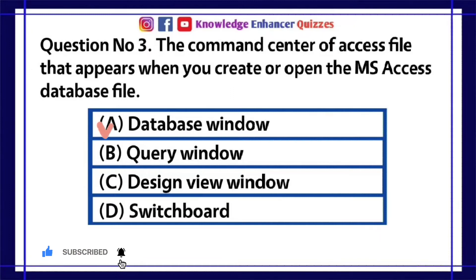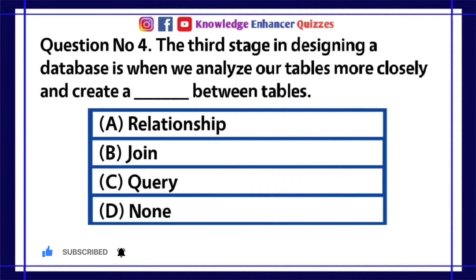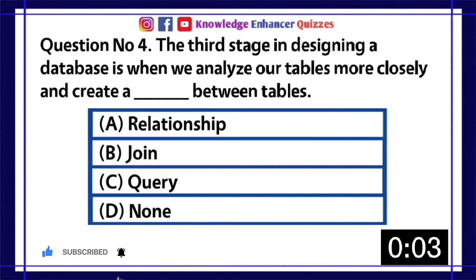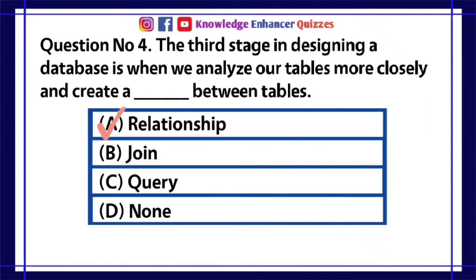Question number four: The third stage in designing a database is when we analyze our tables more closely and create a blank between tables. A) Relationship, B) Join, C) Query, D) None. Option A is the right answer.